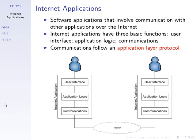An internet application is some piece of software that involves communication with other applications in order to achieve its objectives. For example, a web browser is an internet application that communicates with a web server. The objective for the user is to view content on a remote computer — the web server — while the web server's objective is to make that content available to multiple people on different computers.